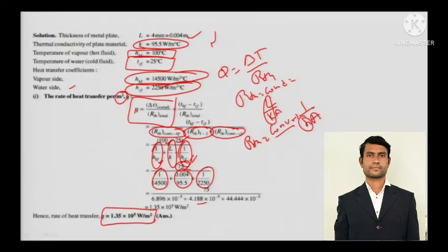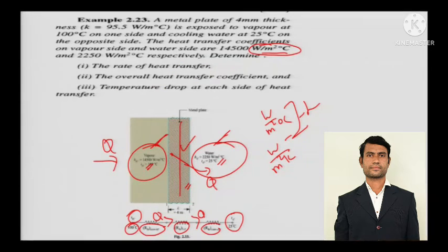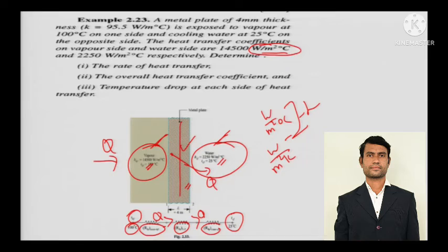When you have convection combined with conduction, convert the system into an electrical resistance circuit. If resistances are in series, add them directly. If elements are in parallel, the equivalent resistance is found using 1/R_eq = Σ(1/R).